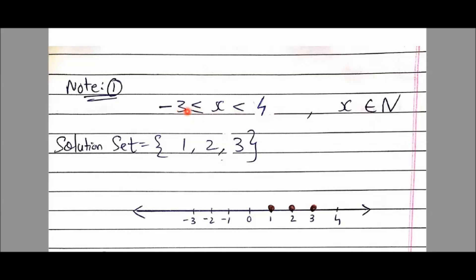Since -3 ≤ X < 4, X can equal -3, -2, -1, 0, 1, 2, 3 — but not 4, because there is no equal-to symbol and X is strictly less than 4. However, because the replacement set is natural numbers and natural numbers start with 1 only, the values -3, -2, -1, and 0 will not be included. So our solution set will be {1, 2, 3}. Even 4 will not come because the equal-to sign is not there.